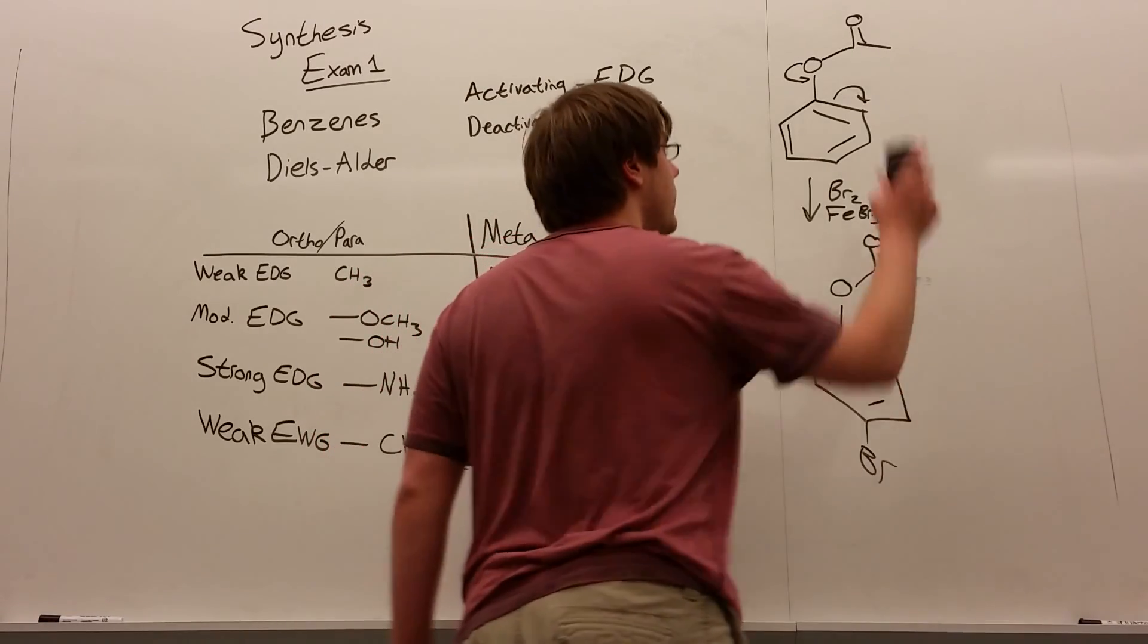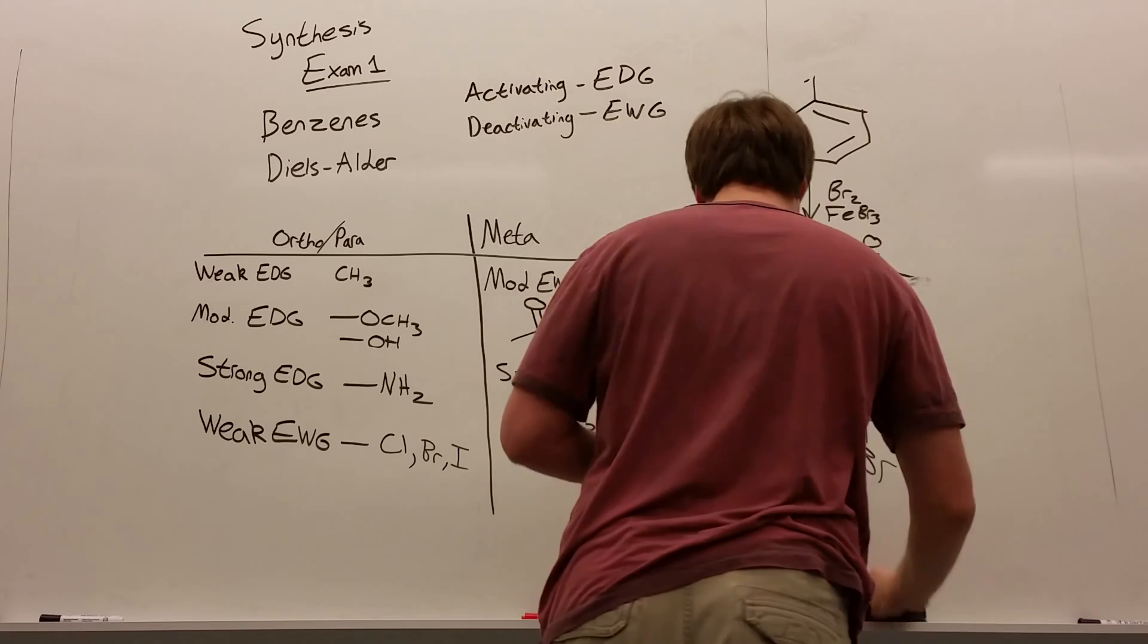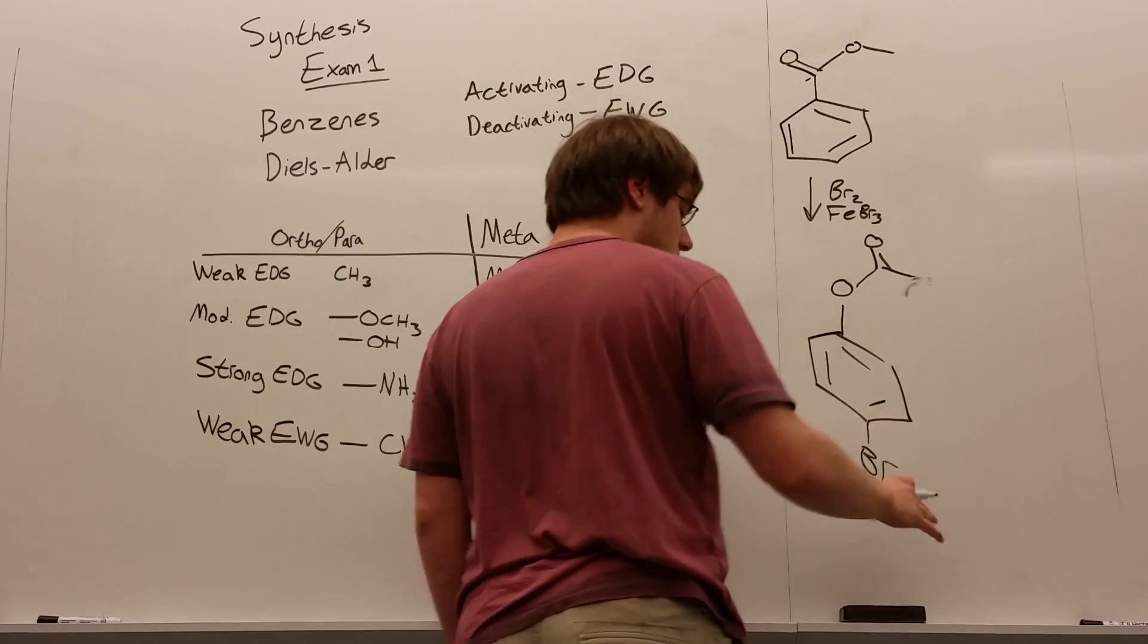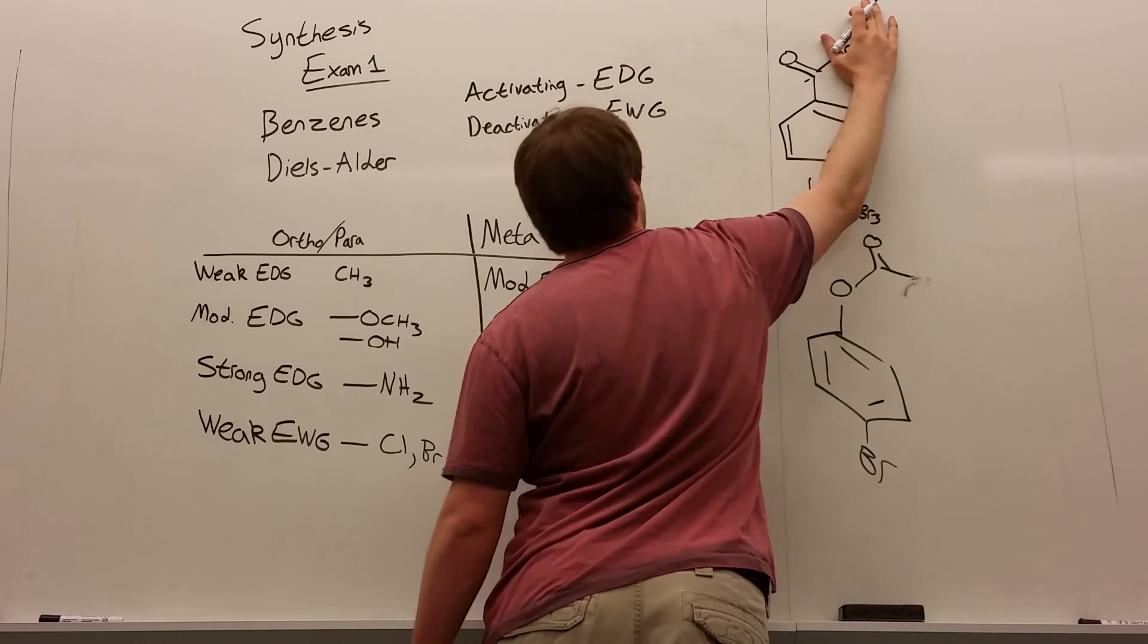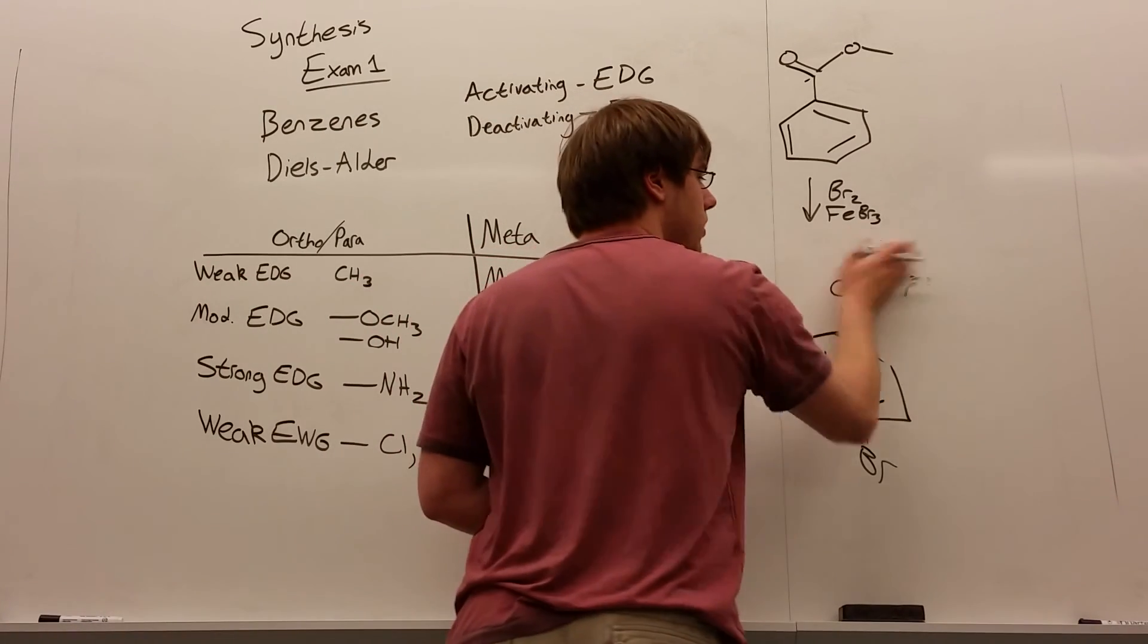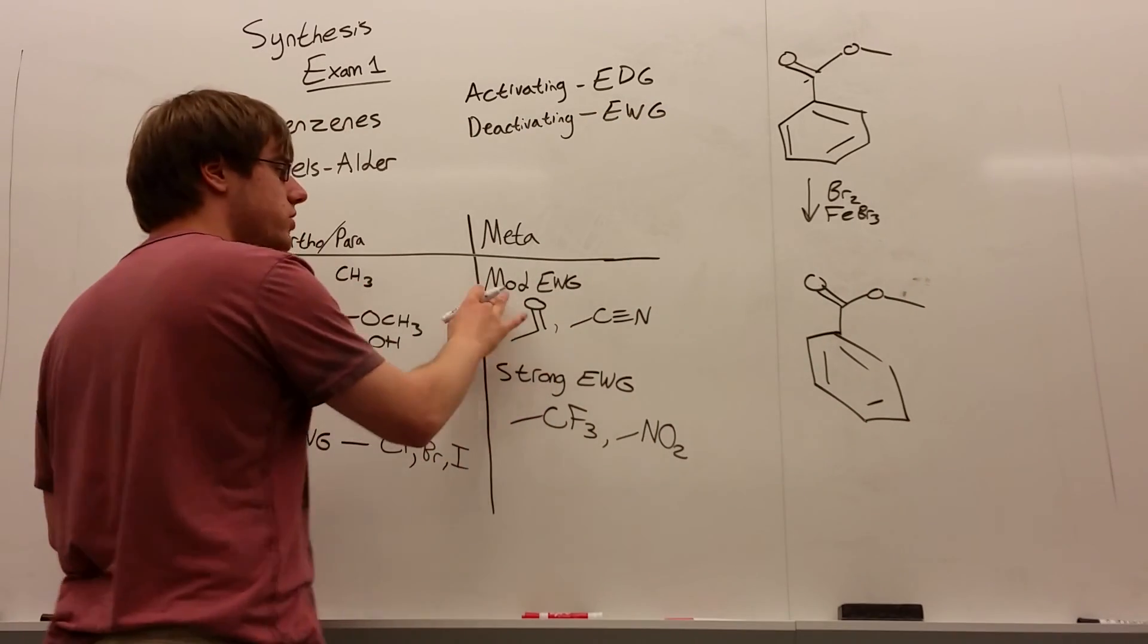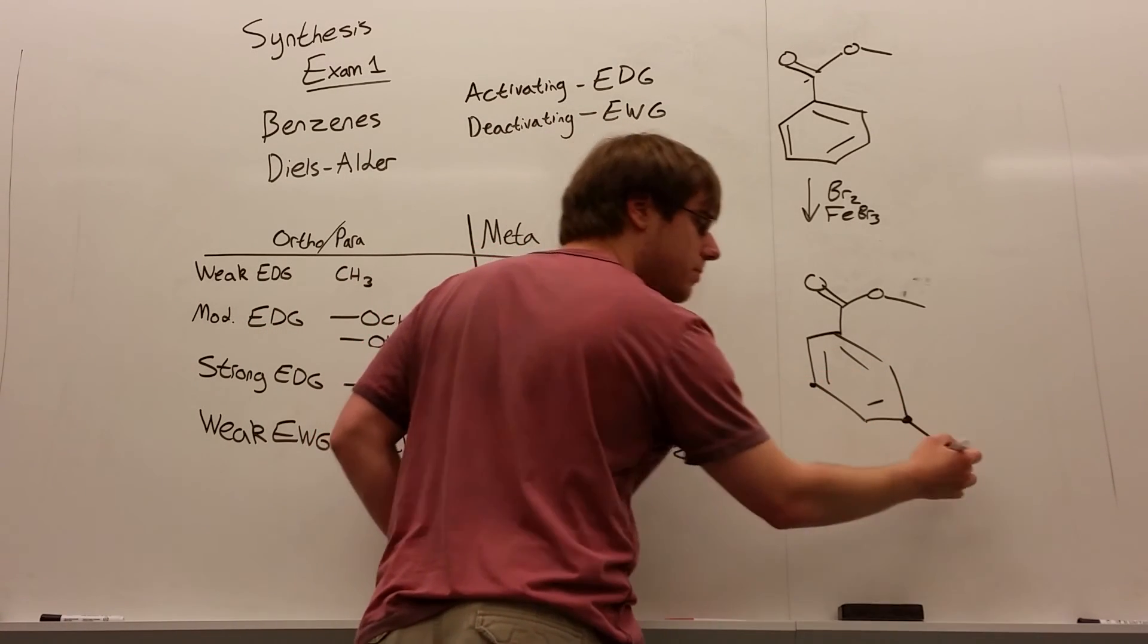Now what if I change this slightly? What if I said, now it's double bond O, and then the oxygen's over there? Well, in this case, I again only look at the thing that's a single bond away. I have a double bond O a single bond away from the benzene, and double bond O is a withdrawing group, which means when I draw this in, the bromine, because the double bond O is a withdrawing group and a meta director, would be added either here or here, the meta positions.